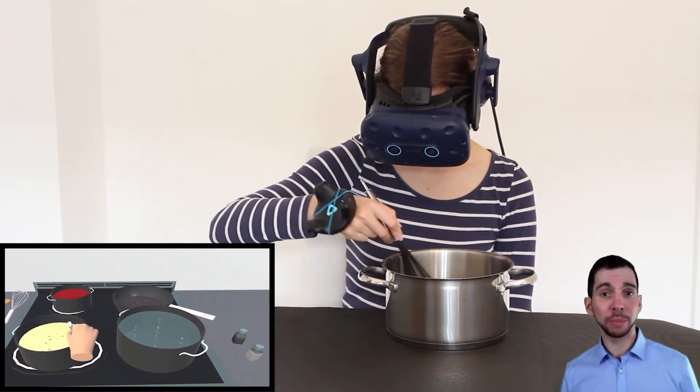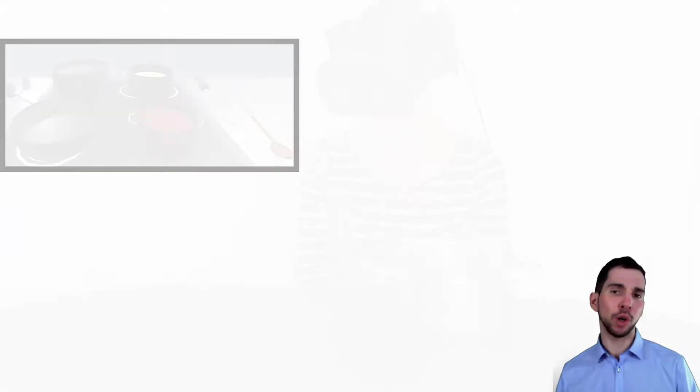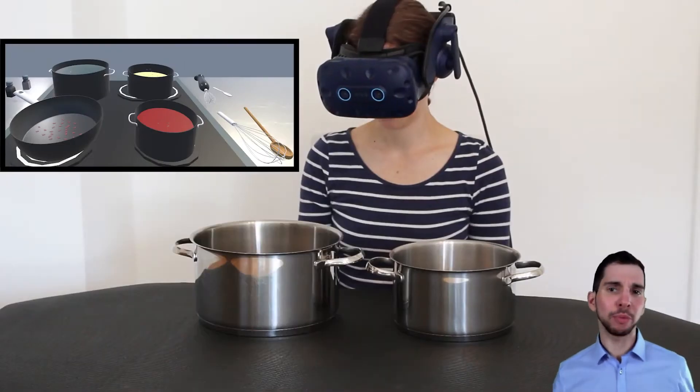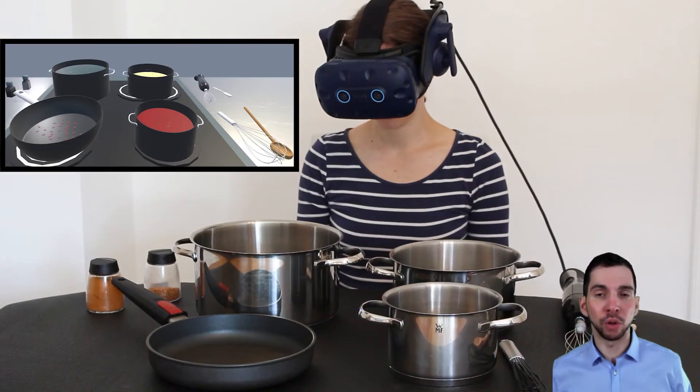For example, this proxy pot acts as a stand-in for the virtual pot on the stove. However, it is largely impractical to have a physical proxy for every single virtual object in the environment. This would be essentially recreating the virtual world.